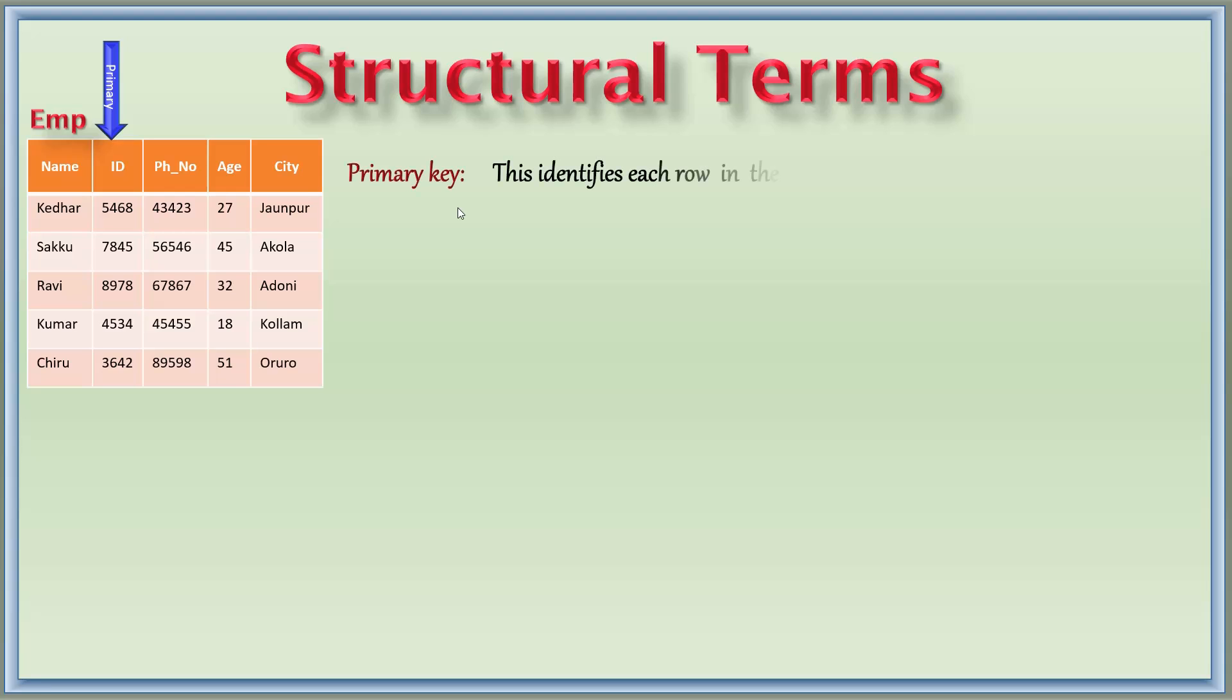Primary key identifies each row in the table uniquely, and then you need to note down this: One table can only contain one primary key. The primary key must be unique and without null values. Null values means nothing but empty.